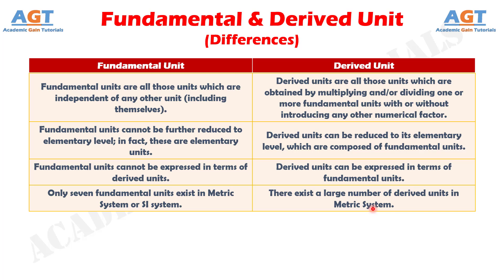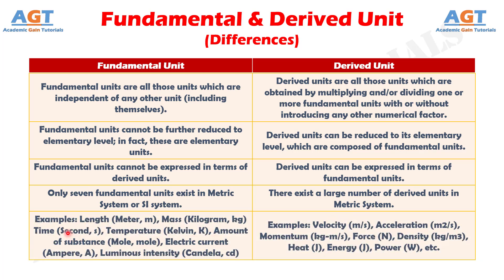Difference number 5: Examples of the 7 fundamental units, their abbreviation and corresponding physical properties are: length, expressed in meters; mass, expressed in kg; time, expressed in seconds; temperature, expressed in kelvin; amount of substance, expressed in moles; electric current, expressed in amperes; and luminous intensity, expressed in candela.